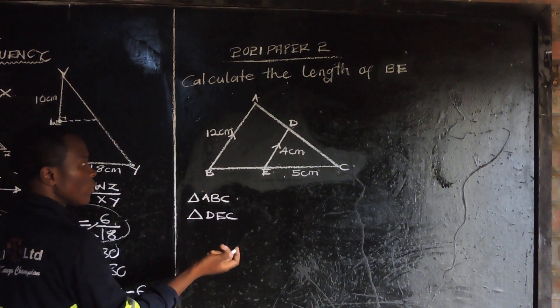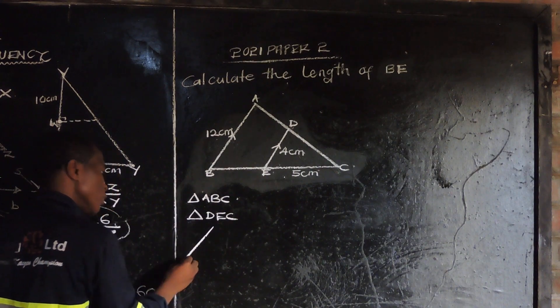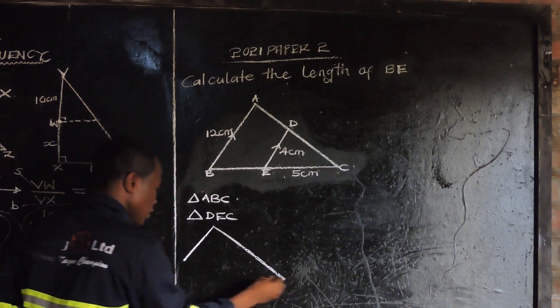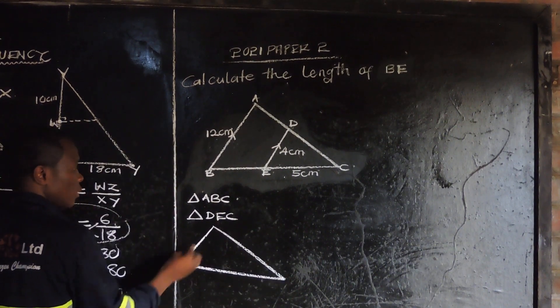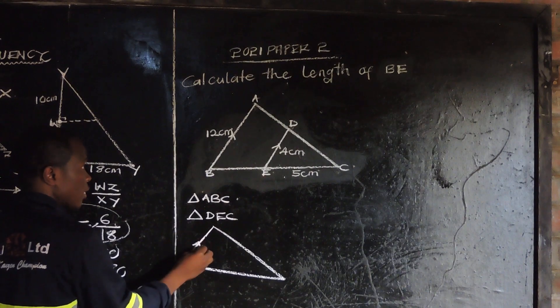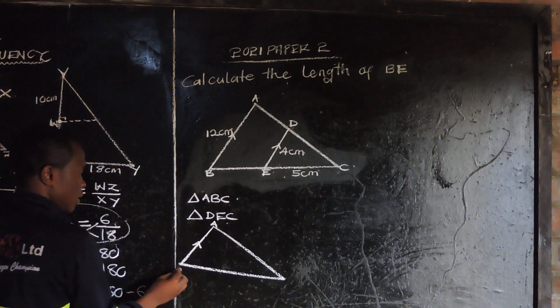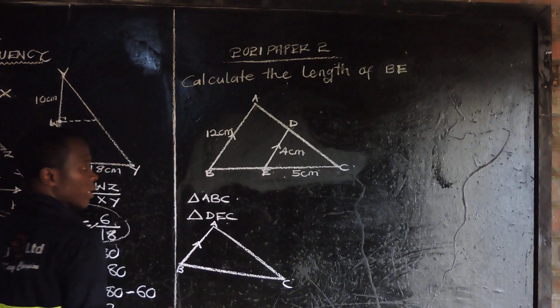Let me start with the big one. I've got a big triangle looking like this. This is A, this is B, and this is C.